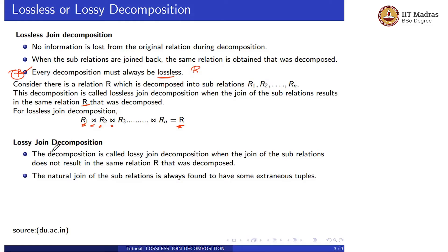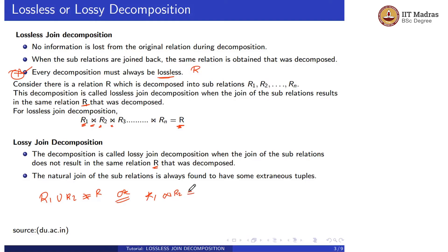Lossy joint decomposition: the decomposition is called lossy joint decomposition when the join of sub-relations does not result in the same relation R that was decomposed, meaning R1 union R2 is not equal to R, or R1 natural join R2 is not equal to R. The natural join of sub-relations is always found to have some extraneous tuples.